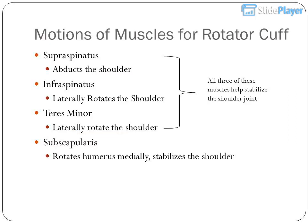Motions of muscles for the rotator cuff: supraspinatus abducts the shoulder. Infraspinatus laterally rotates the shoulder. Teres minor laterally rotates the shoulder. Subscapularis rotates the humerus medially and stabilizes the shoulder. All three of these muscles help stabilize the shoulder joint.